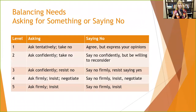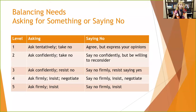Balancing needs starts with asking for something or saying no across five levels. Level one: you ask tentatively and take no — like 'do you want to go out to dinner tonight?' You're not really committed either way. Level two: you ask confidently and are willing to take no — 'I would really like to go out to dinner tonight, would you go with me?' Be willing to take no for an answer; you still have other options.